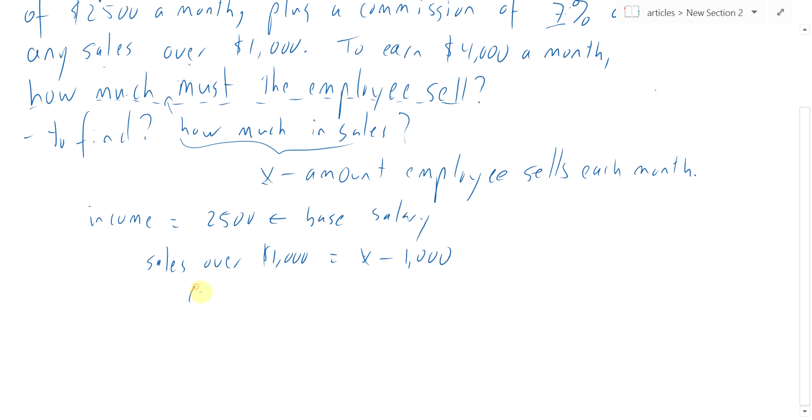So what's their commission? The commission is 7% of sales over $1,000. And what is 7%? How do we go from percentages to actual numbers? You have to convert it to 0.07.